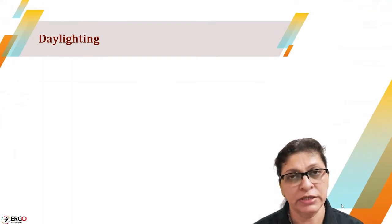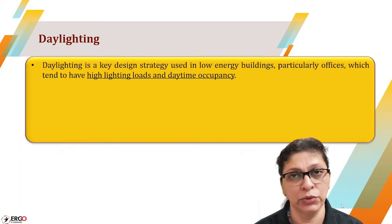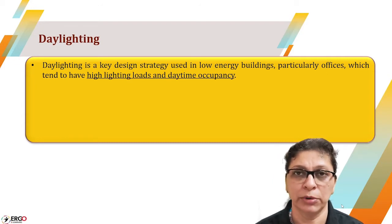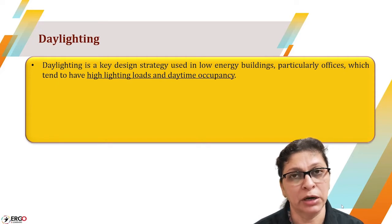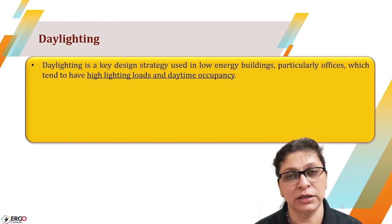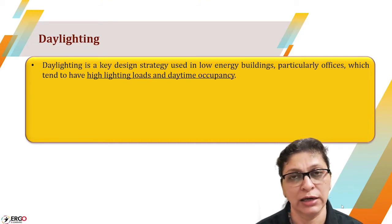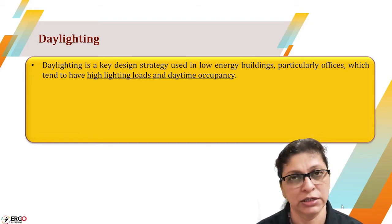Let us start with what is daylighting. Basically, whenever we utilize naturally available light and reduce the artificial lighting load on the building, that is the very purpose of performing daylighting. This is applicable where the building is mostly used during daytime and has very high occupancy. For example, an office building is mostly used during daytime and has major occupancy, so with proper daylighting it can have a reduced lighting load. That is the first benefit.